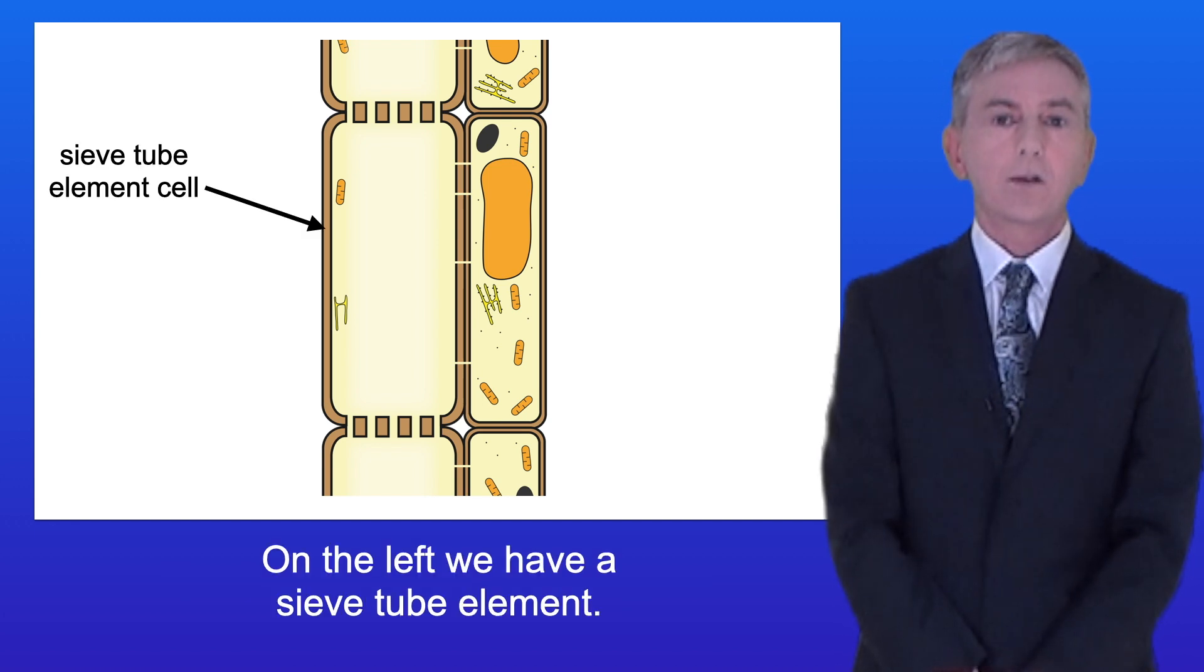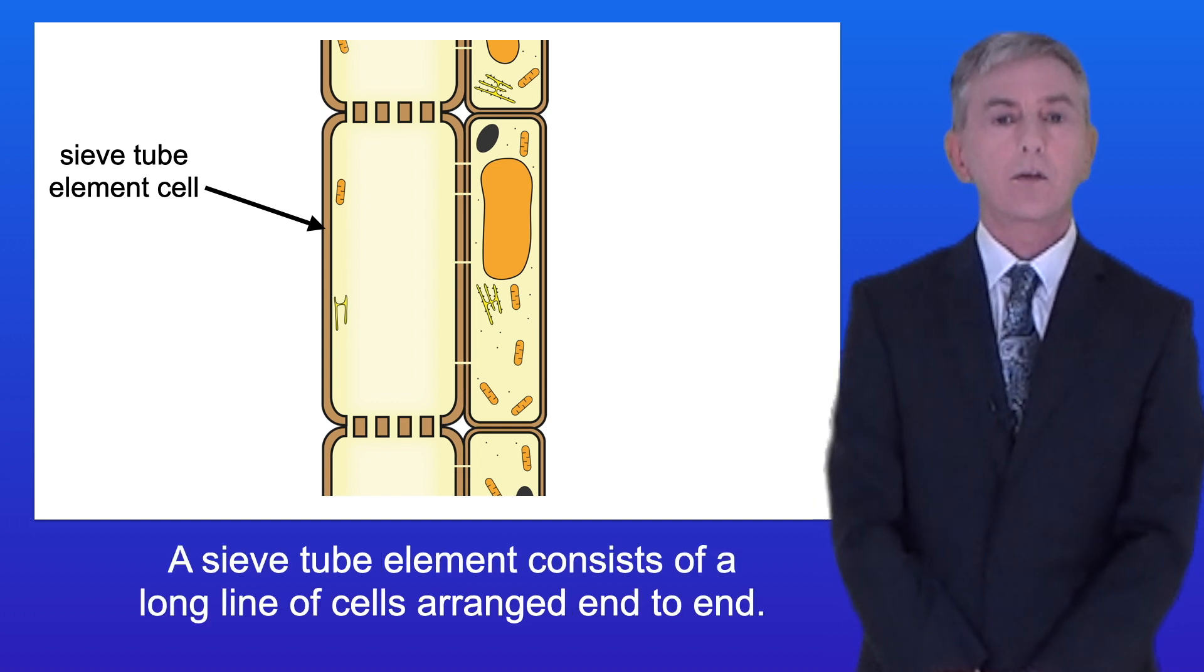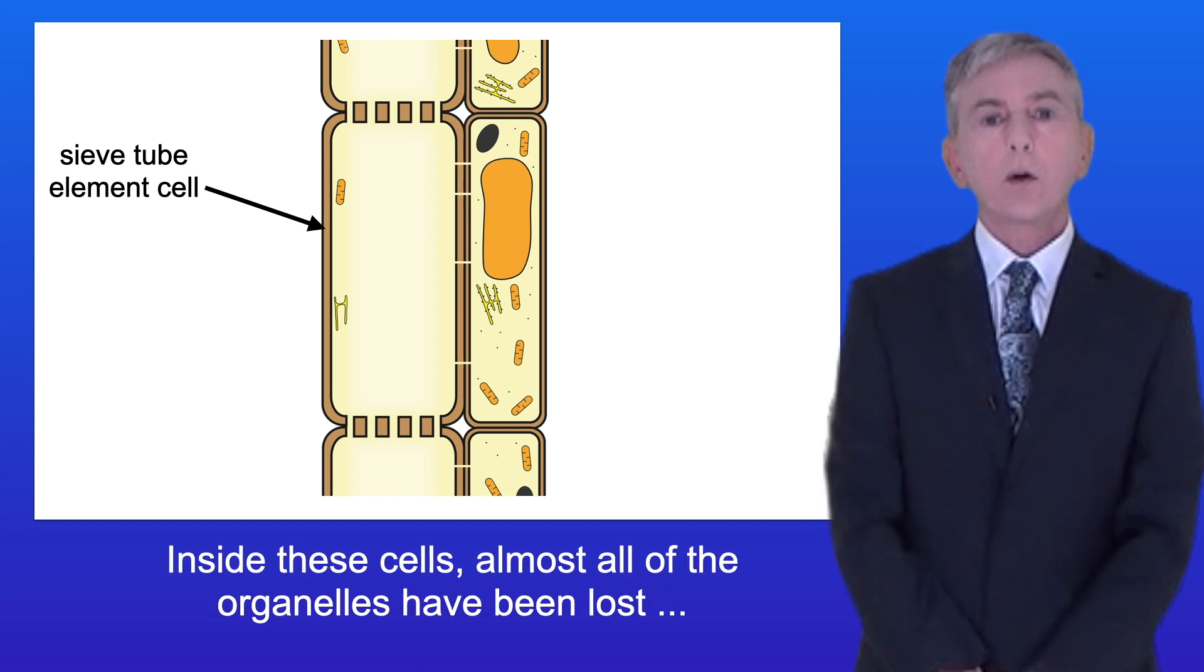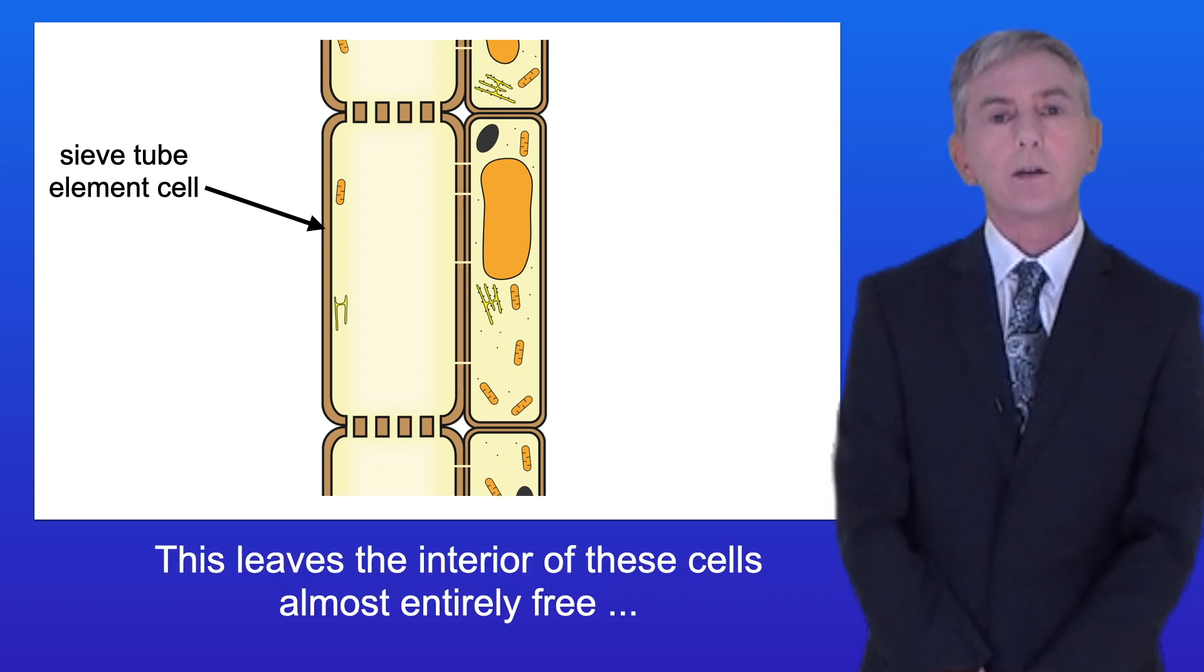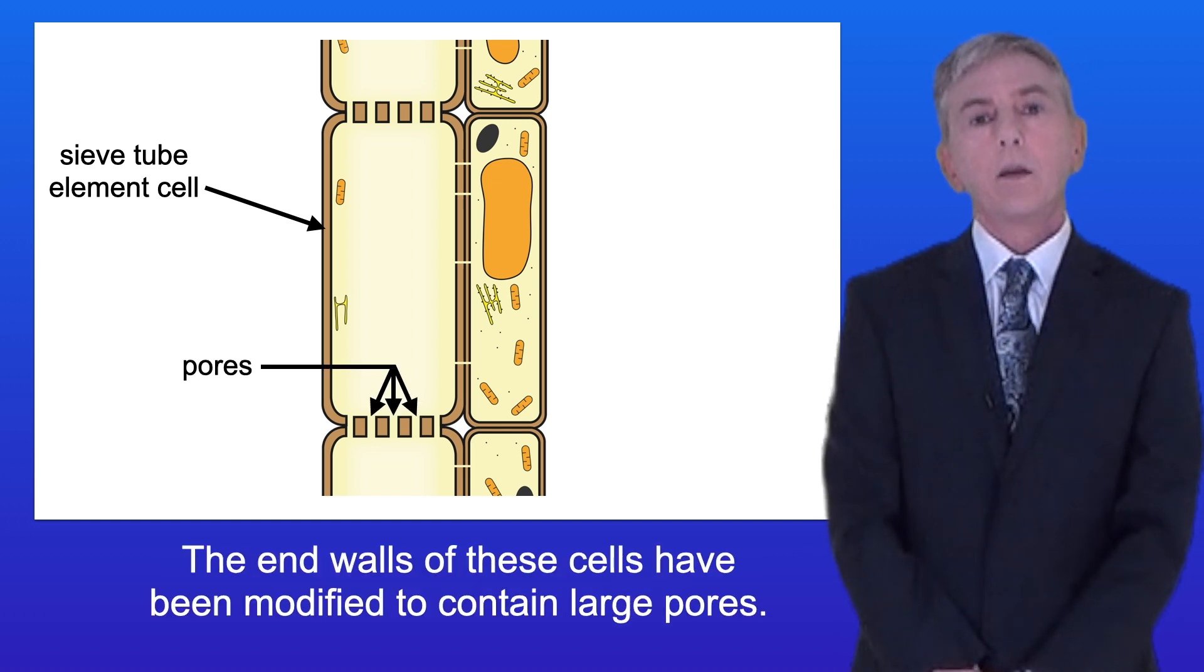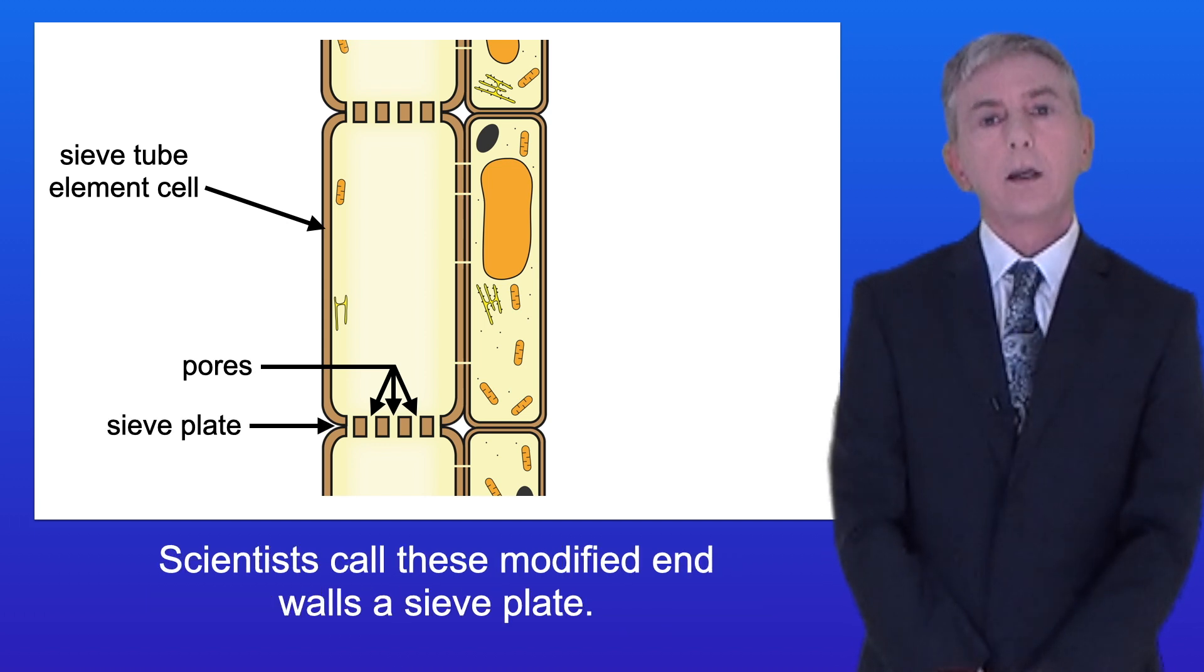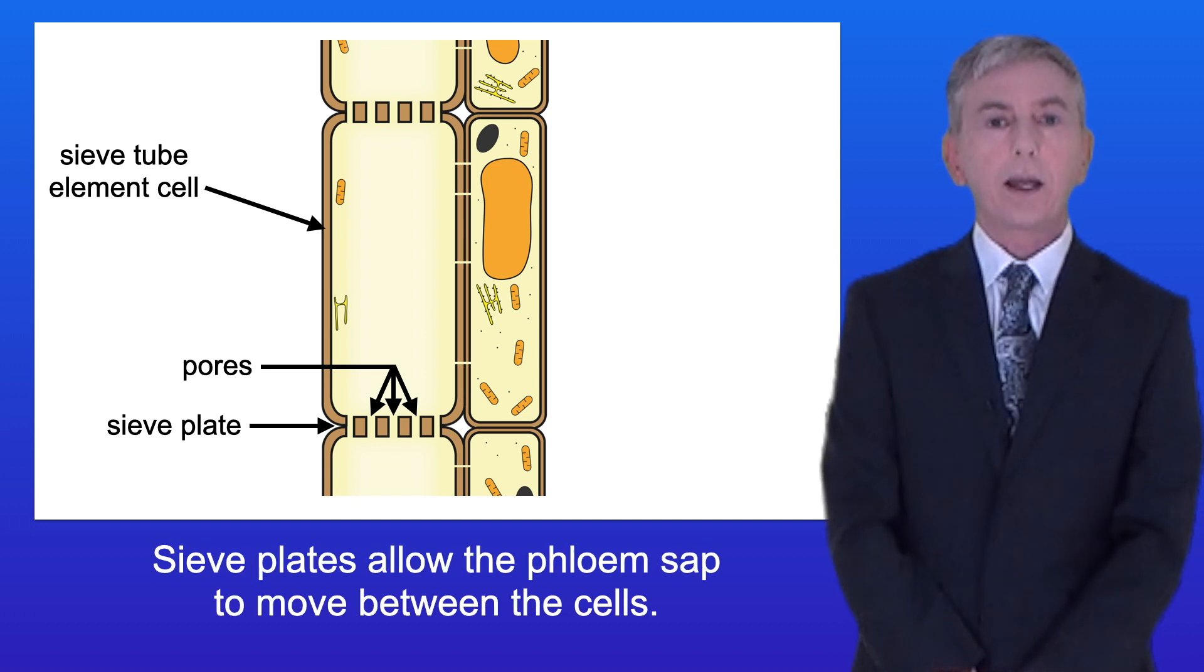On the left we have a sieve tube element. A sieve tube element consists of a long line of cells arranged end to end. Inside these cells almost all of the organelles have been lost including the nucleus and vacuole. This leaves the interior of these cells almost entirely free to transport phloem sap. The end walls of these cells have been modified to contain large pores and scientists call these modified end walls a sieve plate. Sieve plates allow the phloem sap to move between the cells.